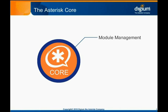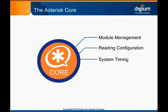Besides managing the loading and unloading of other modules, the Asterisk core has several other responsibilities. It reads system configuration, as discussed in the configuration overview module. It provides system timing, so that audio streams from multiple sources can be synchronized properly, like for a conference call. And it manages Asterisk's internal channel structures.